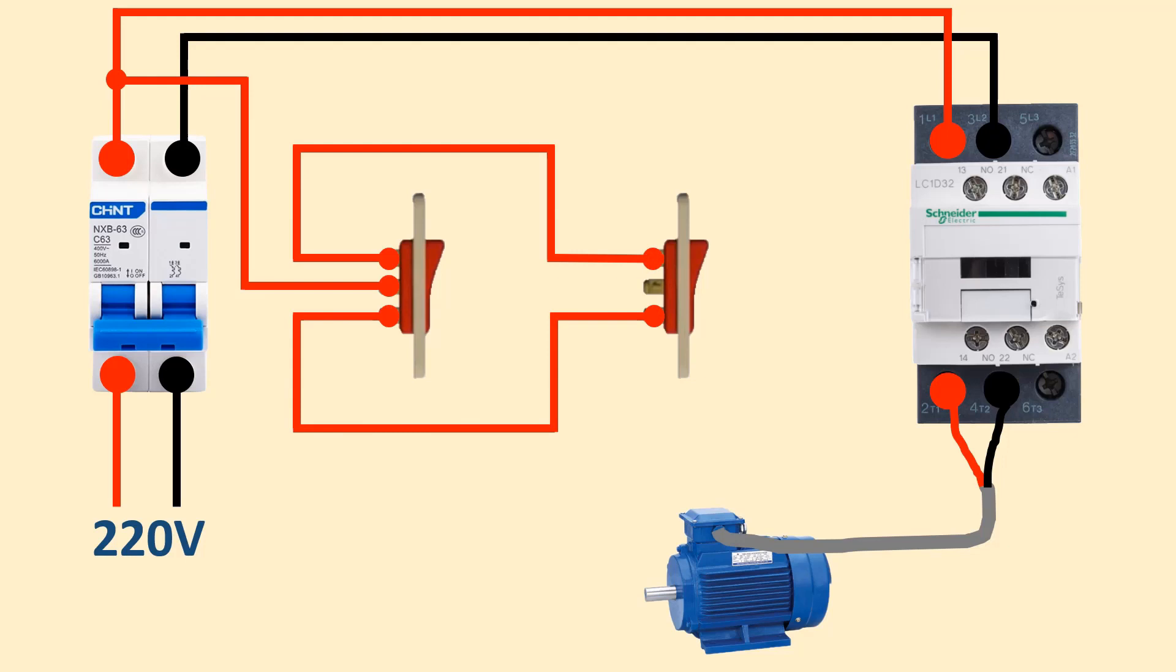Take the line from the common terminal of this two-way switch to contactor A1 terminal. Then connect contactor A2 terminal with neutral line.